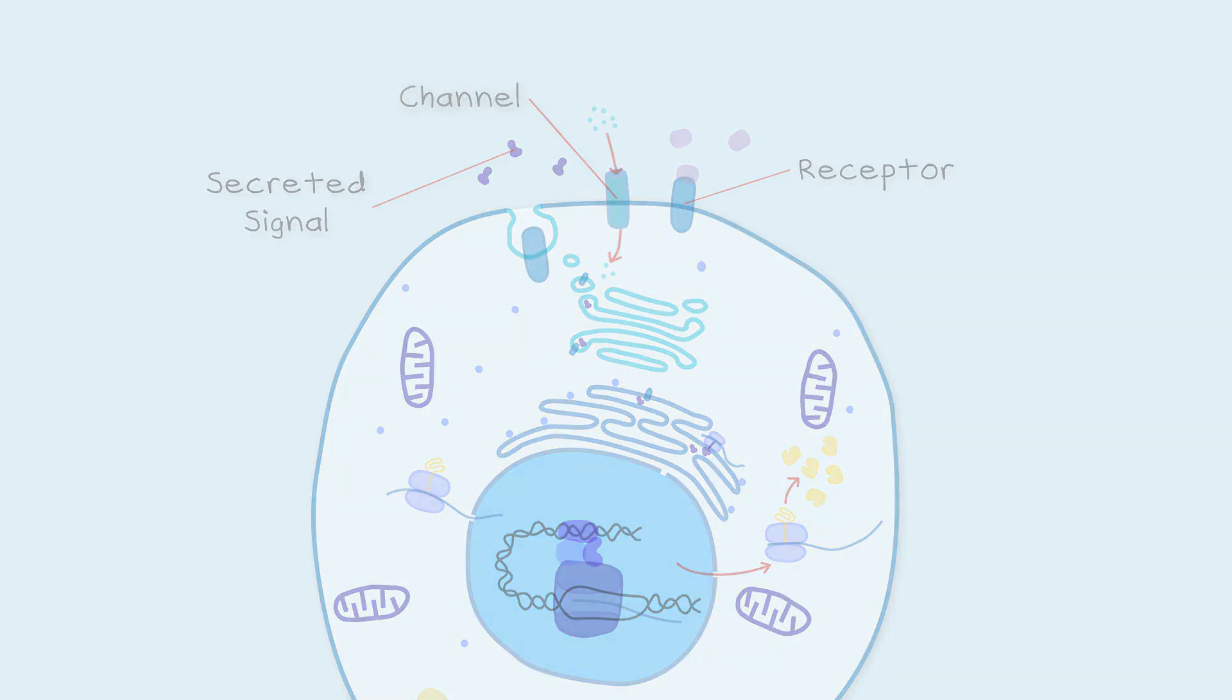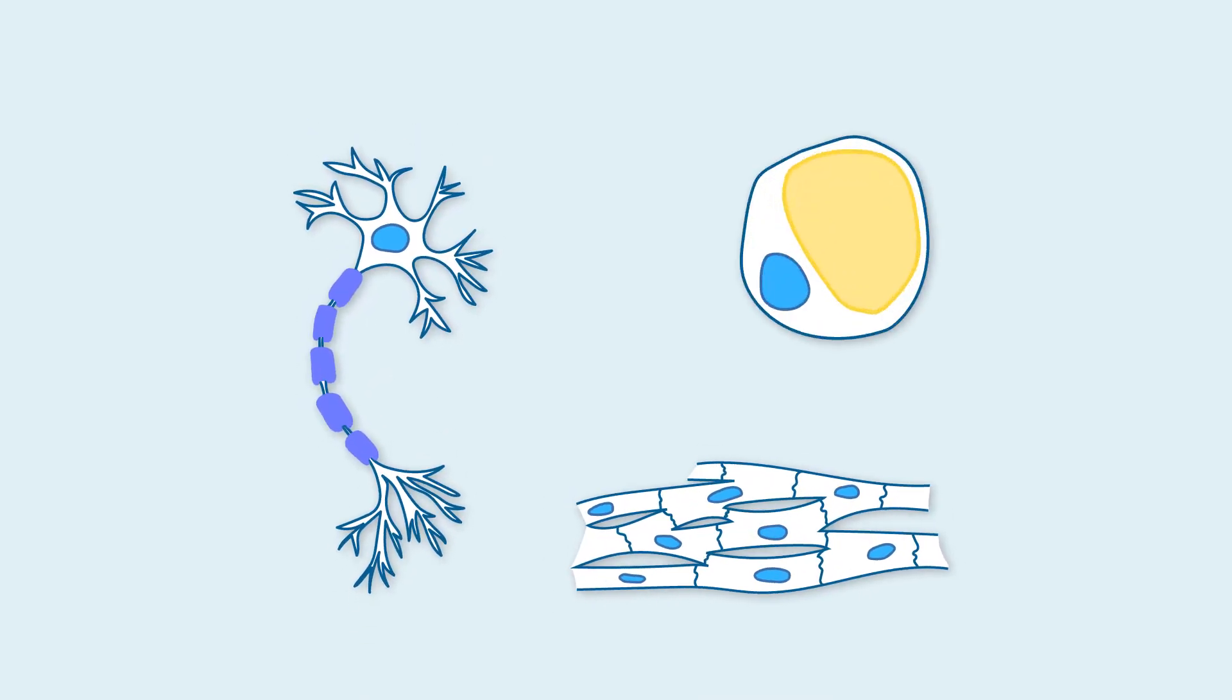The type and amount of protein made by a cell will determine how it looks and what role it plays in the body. A cell structure is also related to its function.